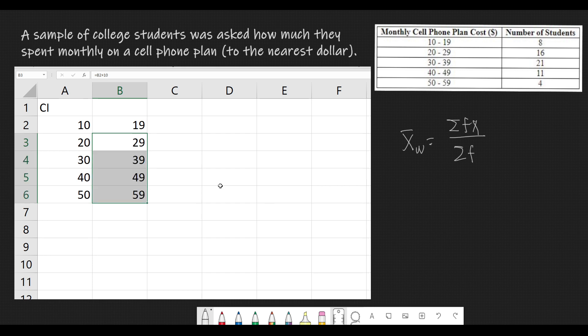The next thing to do is to list the frequencies. So, this should be 8, 16. Of course, this should be done manually. 21. 11. And then 4.